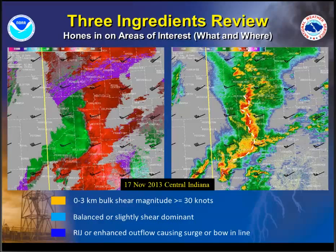You find the updraft-downdraft convergence zone by looking at your velocity or SRM plot. Tracing it from east of Remington, west of Monticello, close to Chalmers, down towards Lafayette, and east of Linden, then curling back towards Kingman. That line drawn on the reflectivity plot is kind of messy, especially around those updraft cores. Once you start getting out ahead of it, you're slightly outflow dominant. Right on the leading edge of your stronger cores is your balance region, and getting back into the precipitation region is where you're slightly shear dominant. Going through the three ingredients method for this line segment.